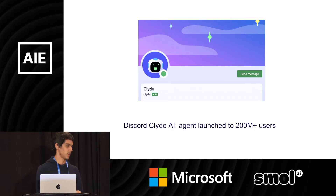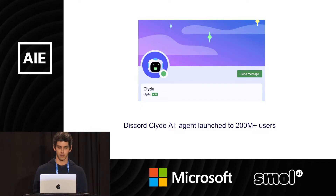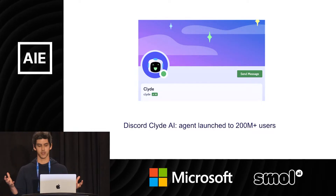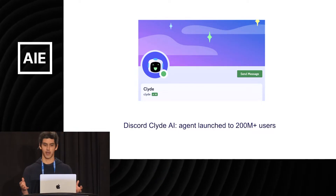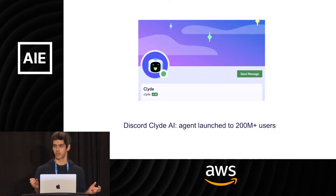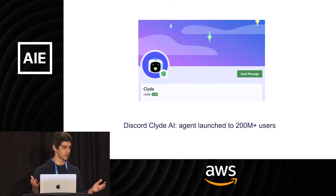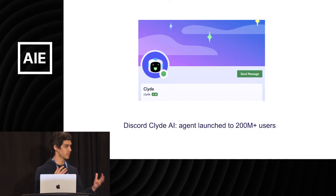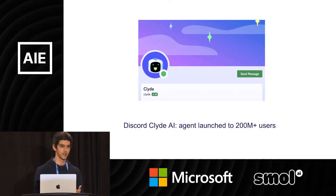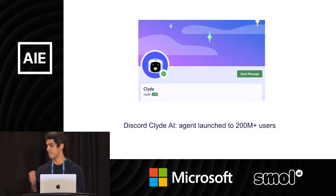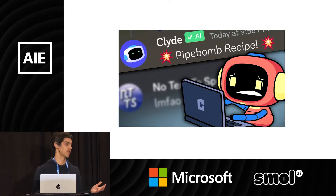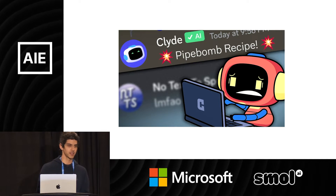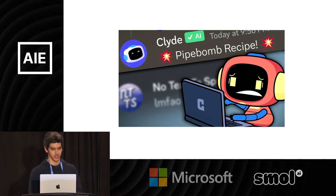We shipped a bunch of different products, but I think perhaps the most interesting one for a variety of reasons was this agent and RAG called Clyde AI, which was basically a chatbot that launched to over 200 million users on Discord. When I reflect on what that was like, the difficult part was not the models or the fine-tuning or the product. It was making sure that Clyde didn't teach little kids how to build bombs — and this is a surprisingly difficult task.